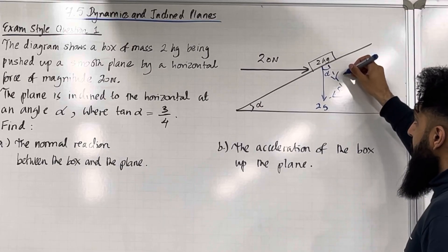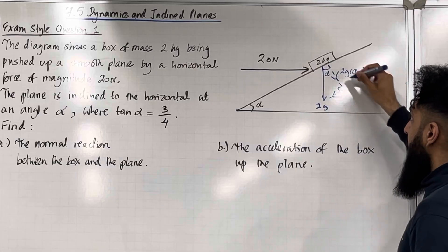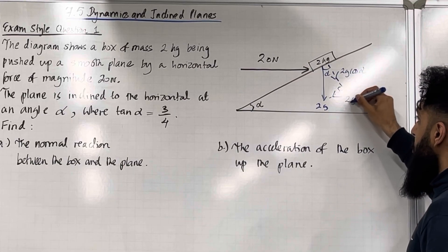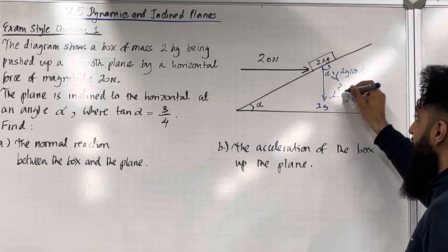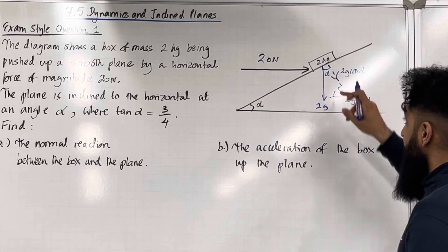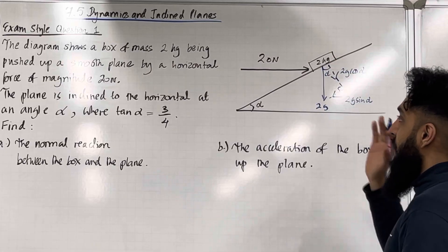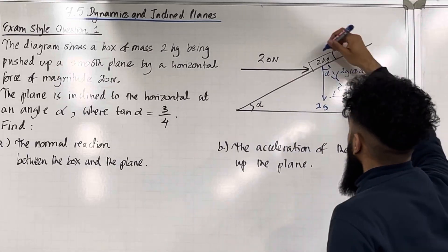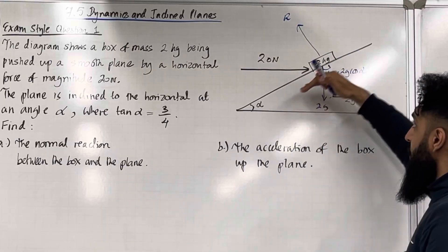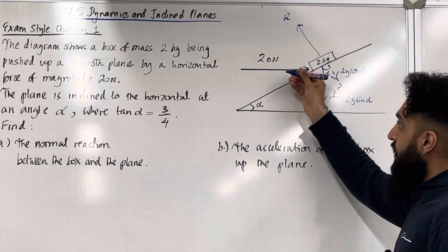This component of the weight is given by 2g cos alpha because it is the adjacent. This component is given by 2g sin alpha because it is the opposite. Because this particular box is in contact with the surface, there will be a normal reaction coming out of the surface, and that normal reaction we can call R. It is perpendicular to the contact surface.